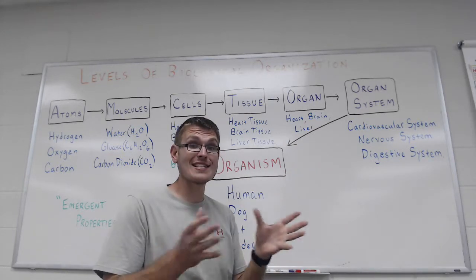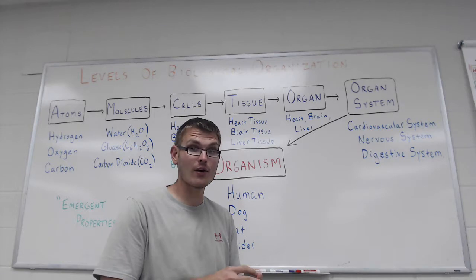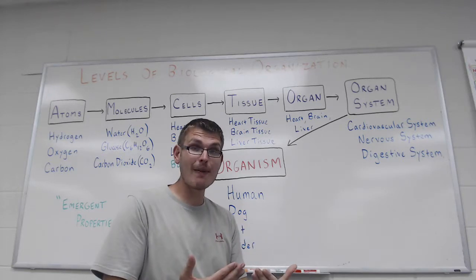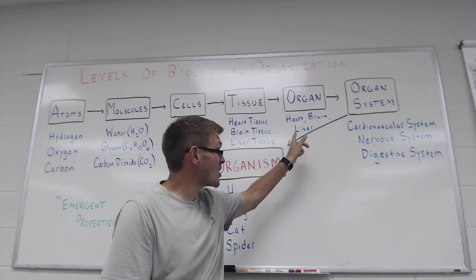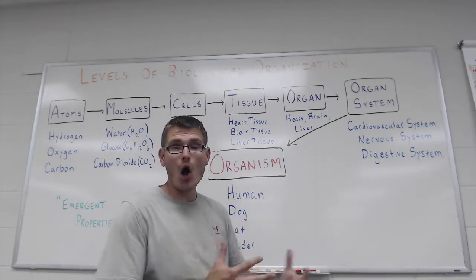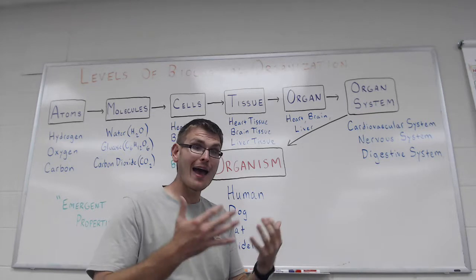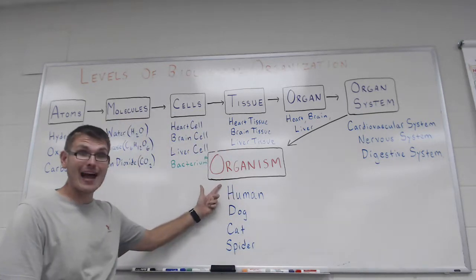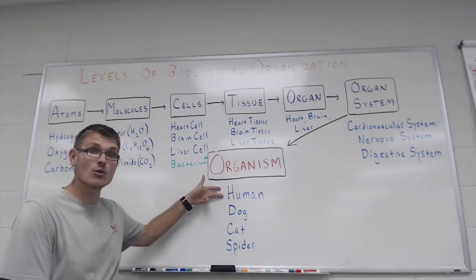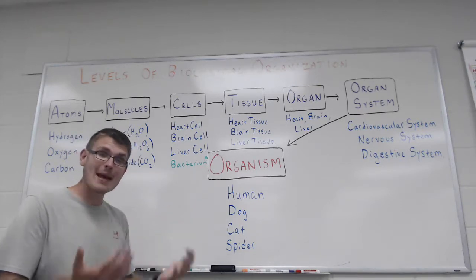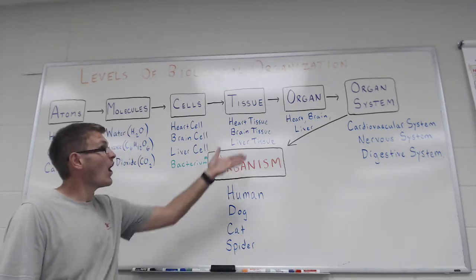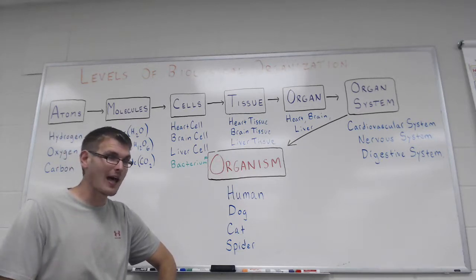So again, you have all these different components working together to give you a new emergent property. So the digestive system has qualities about it that wouldn't be possible with just each individual organ alone. And then finally, when you get all of these different organ systems working together, you end up with an entire organism. So here we're obviously talking about multicellular organisms like humans, dogs, cats, spiders, basically anything you want. You can even start to add things like plants and fungi into the mix.